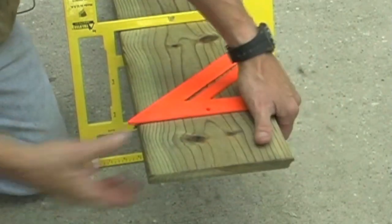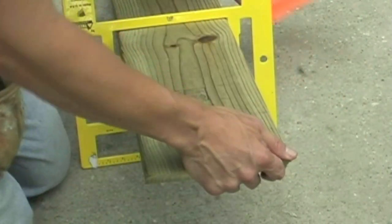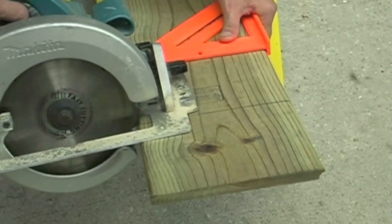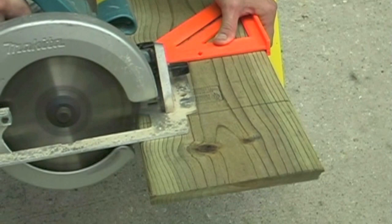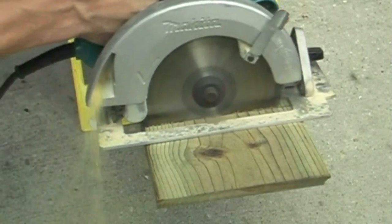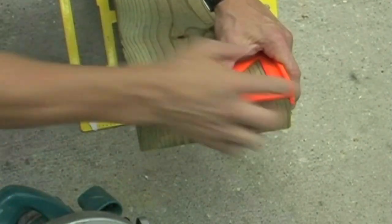Okay, now I have a perfect miter. Watch how fast it is, and smooth it is, making a straight cut with this. There's my cut.